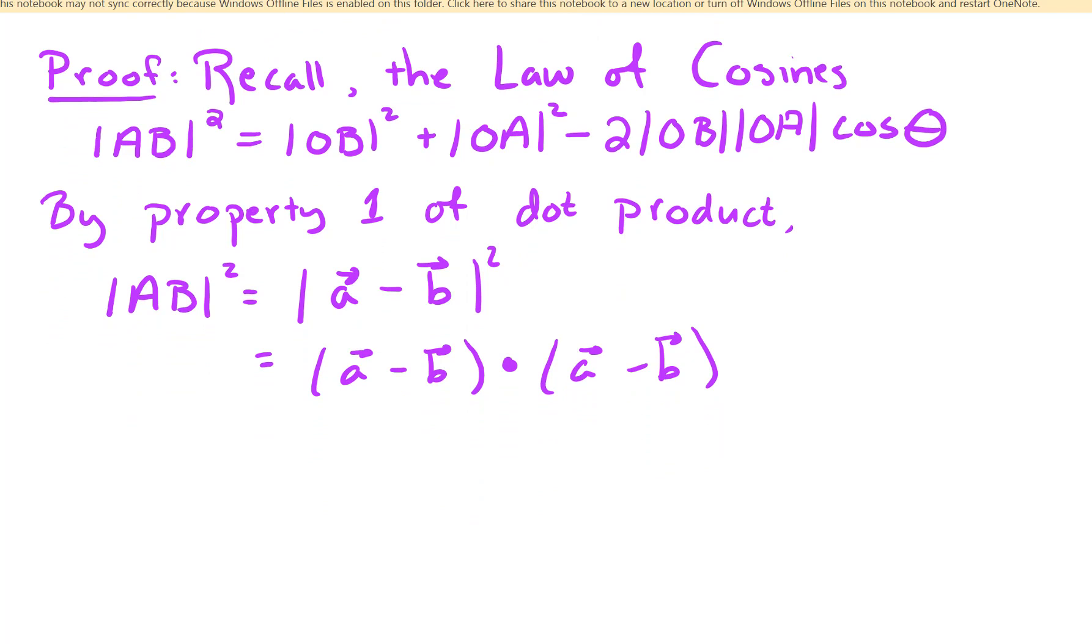So on the left hand side, we're going to have this difference of vectors a minus b dot a minus b. If we work that out, that is a dot a minus b dot a minus a dot b plus b dot b. And this is by property 3 of the dot product. And then if we tidy that up a bit, we're going to get just the magnitude of a squared minus 2a dot b plus the magnitude of b squared. So that's our left hand side.